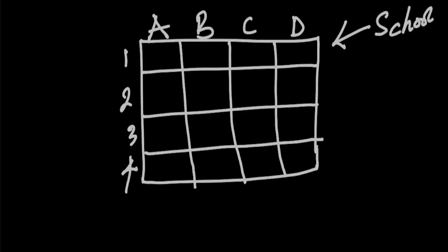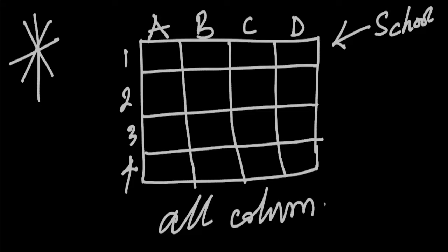Let's say this is A, B, C, and D. Let's say this is 1, 2, 3, 4. Let's call the name of this table school. The question is, what is asterisk in SQL? Asterisk in SQL means all columns.